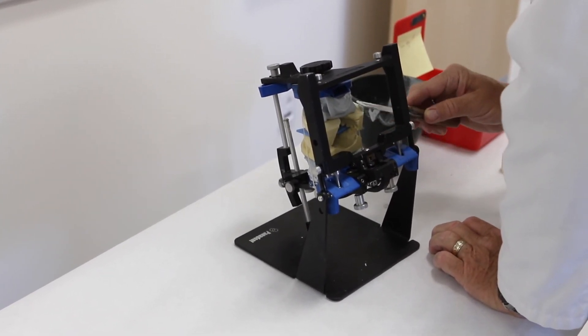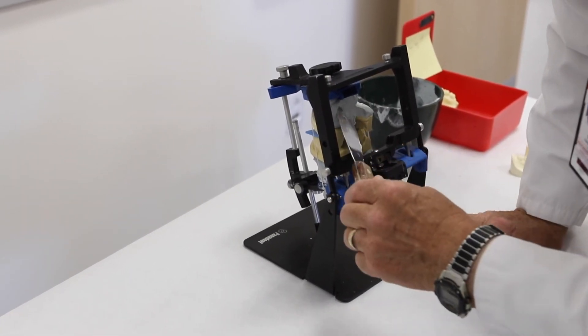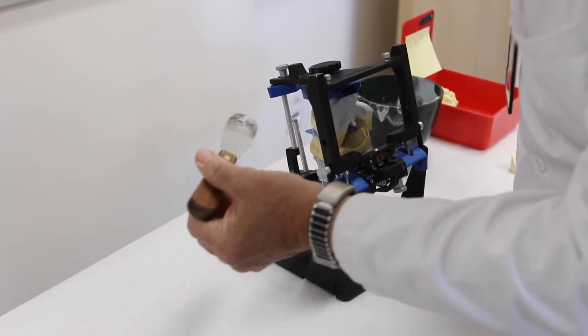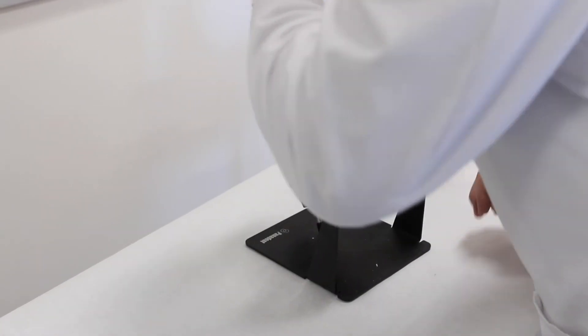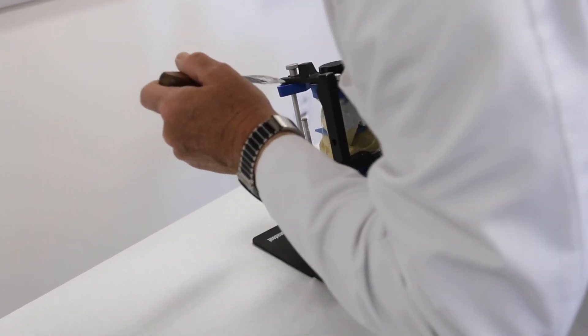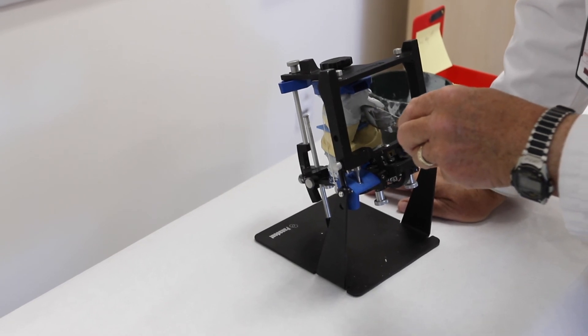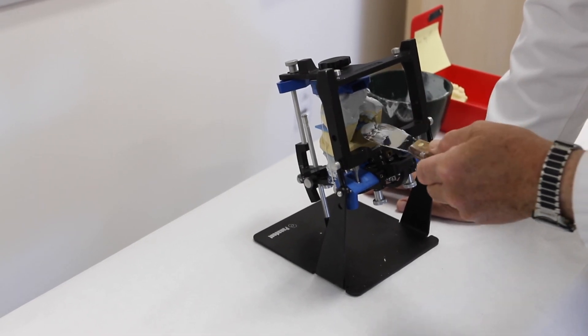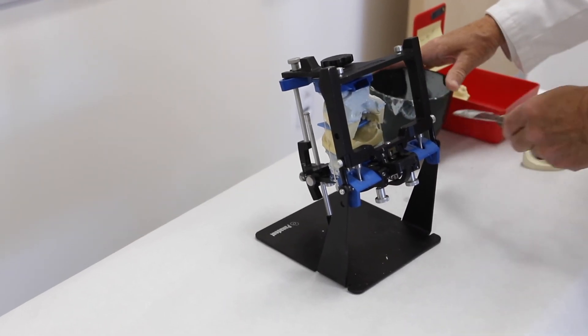Again you can clean up any excess that overflows and bring it into the indexes that you made. Generally your elastic will hold it in place while you do these minor corrections. Again it's important where possible to avoid getting excess blue mounting stone outside of the borders of the lower model.